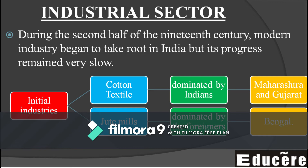We had cotton textile mills and jute mills established. For cotton, you may know that black soil is required — black soil is very good for cotton. So basically the area used was the Maharashtra and Gujarat belt. Black soil is very good there, so cotton grew. Maharashtra and Gujarat are the prime examples for cotton industries.